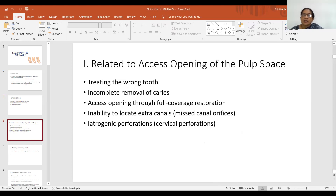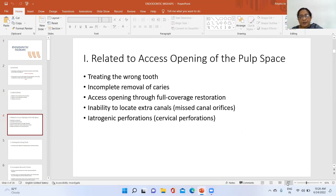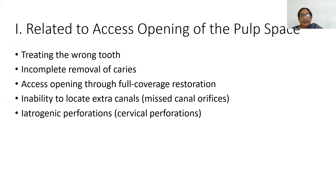Under mishaps related to access opening of the pulp space, we have: treating the wrong tooth, incomplete removal of caries, access opening through full coverage restoration, inability to locate extra canals (that is, missed canal orifices), and iatrogenic perforations, that is cervical perforations.